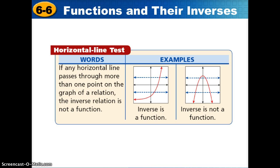If we're trying to determine if a relation is a function, we use the vertical line test. In the case of the left-hand graph, it passes the vertical line test. Then we turn our pencil sideways and use the horizontal line test to determine if it's a one-to-one function. In this case, it does pass the horizontal line test, so we know that the inverse of the function we see is also going to be a function.